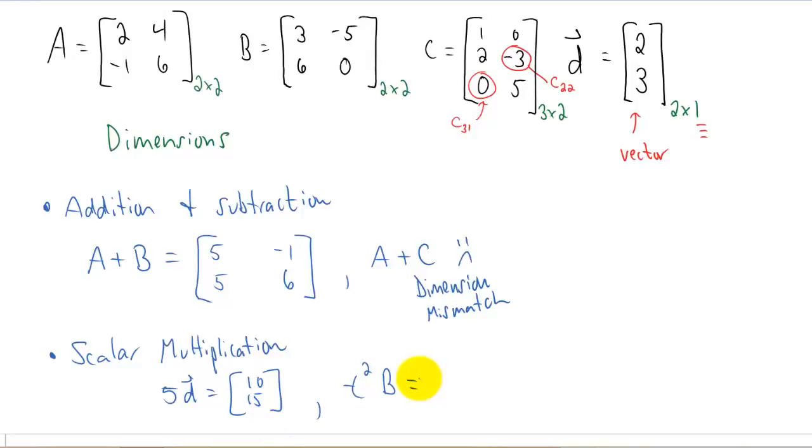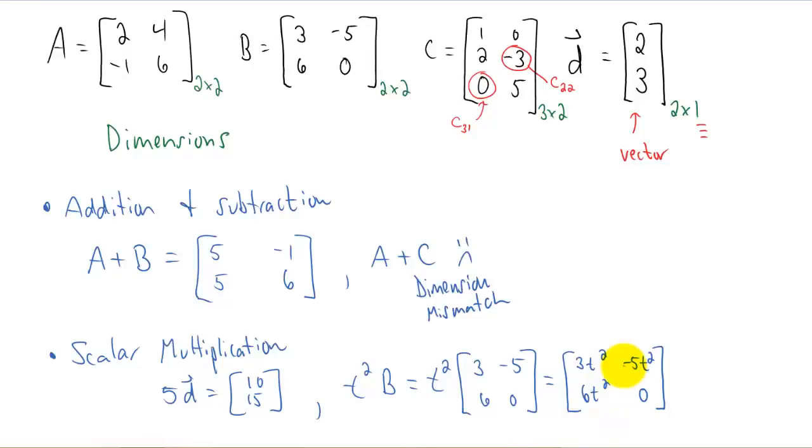Multiplying a function like T squared by matrix B is also considered scalar multiplication. Leaving the scalar outside of the matrix is an option in this case. It's pretty clean that way. But if we want to multiply it into the matrix, all we do is multiply that scalar by every element inside of the matrix. Again, pretty easy. So easy that I'm actually going to erase what we've done so far and start up with matrix multiplication.